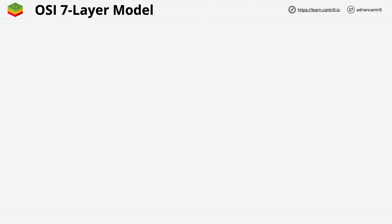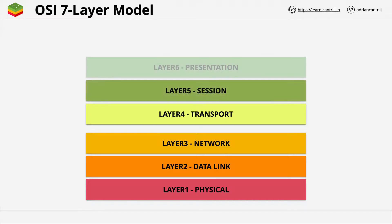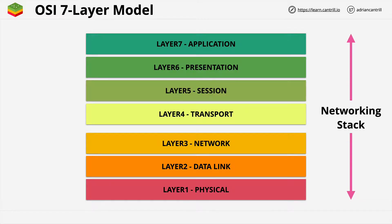This is how it looks: seven layers stacked on top of each other. We start with physical, then data link, then network, transport, session, presentation, and finally application. If you ever hear the term "networking stack," that's what this is — the software which does each of these functions. Your laptop has a networking stack, so does your phone, so does your Wi-Fi or cable router, and so does the server that you're downloading this video from.